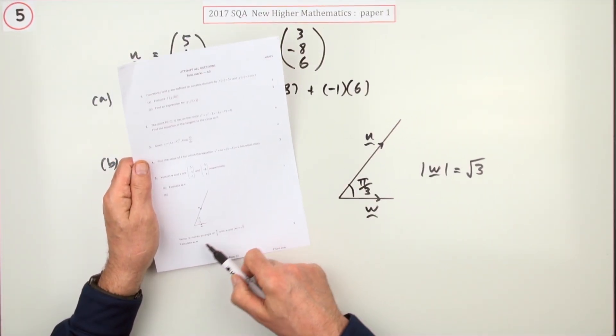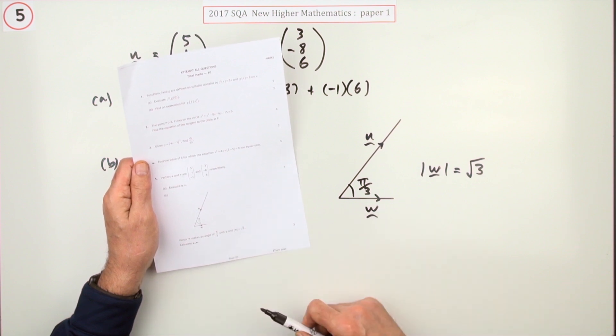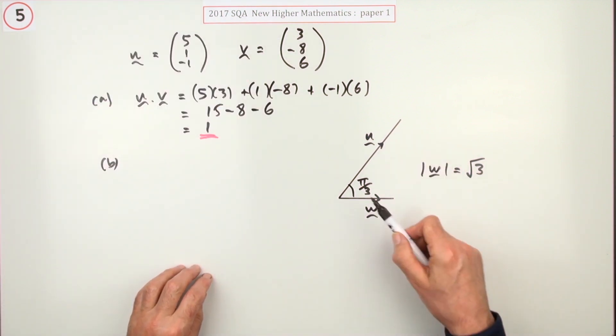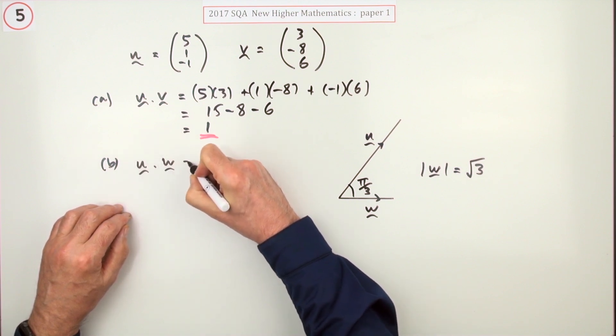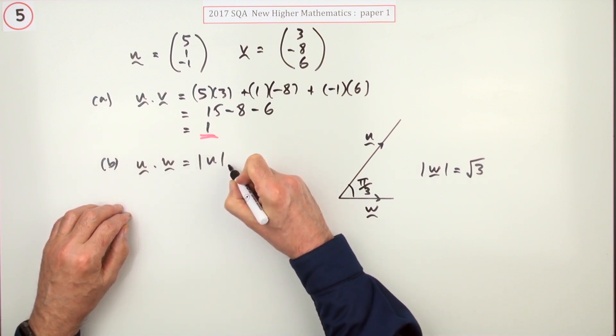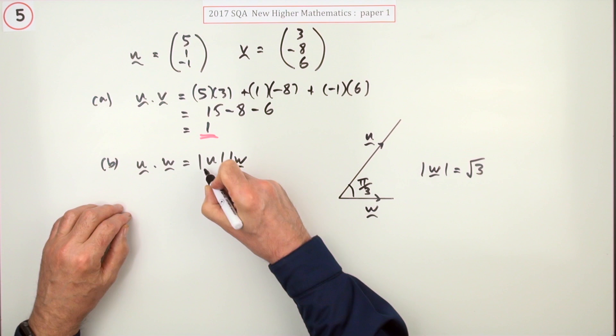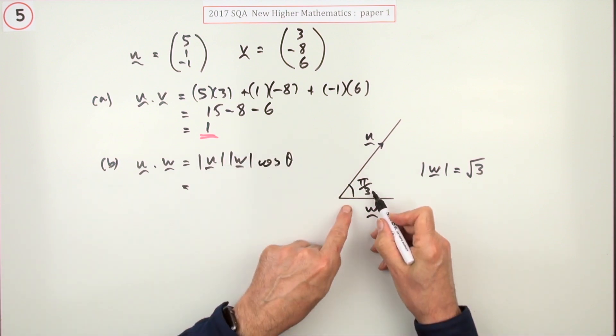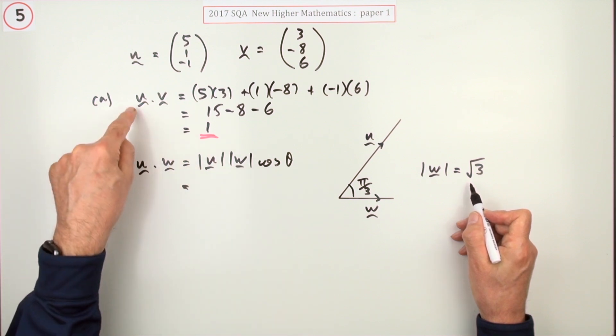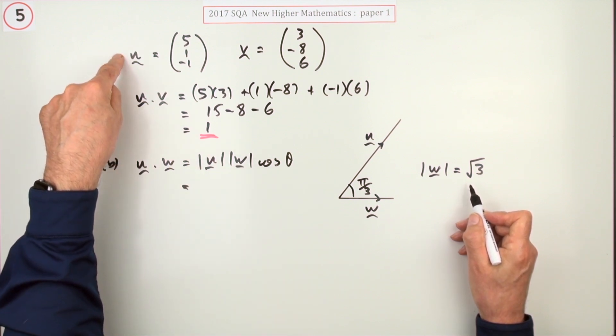Part B wants the scalar product of u dot w, where this time they're given in terms of the lengths and angle. So you just use the other formula: u dot w will be the magnitude of u times the magnitude of w times the cosine of the angle between them. I know the angle between them and the magnitude of w, so first I need to work out the magnitude of u.